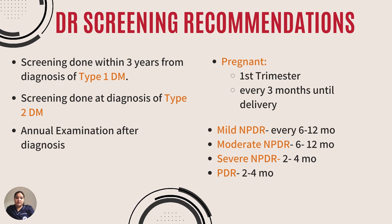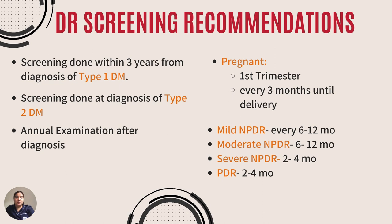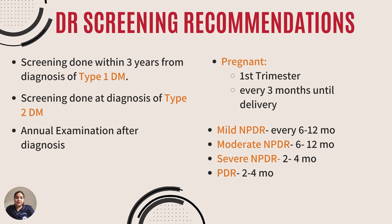For screening recommendations, screening is done within 3 years from diagnosis of type 1 DM, as diabetic retinopathy is relatively rare in type 1 DM. Screening is done at diagnosis for those with type 2 DM, followed by annual examination after diagnosis for both type 1 and type 2 DM diagnosed with diabetic retinopathy. For pregnant women, screening is done in the first trimester and then every 3 months until delivery.